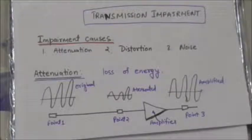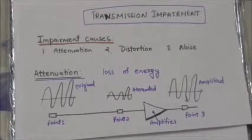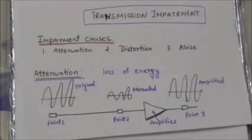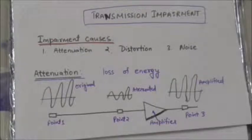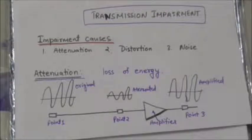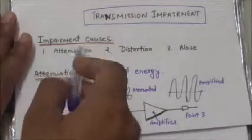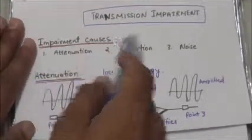Hello friends, welcome back. In this tutorial we will study about transmission impairment. Signals travel through transmission media which are not perfect, and this imperfection causes signal impairment — meaning the signal at the beginning of the medium is not the same as the signal at the end. Three causes of impairment are attenuation, distortion, and noise.